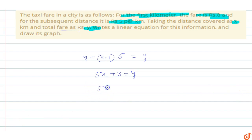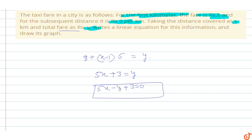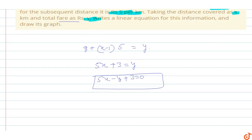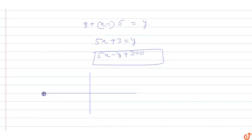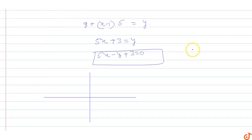So the linear equation in x and y is 5x minus y plus 3 equals to zero. Now we will draw its graph. First, draw the x and y axes. The line cuts the x-axis at the point (minus 3 by 5, 0).